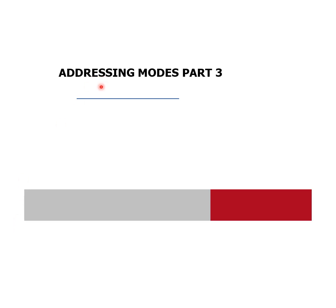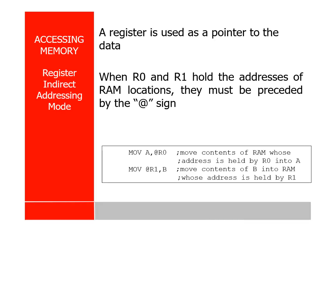Today we are going to see addressing mode part 3. We already explained immediate addressing, register addressing, and direct addressing. Now let us see the next one: how to access data from the RAM using register indirect addressing.